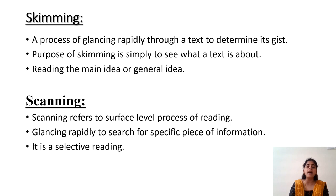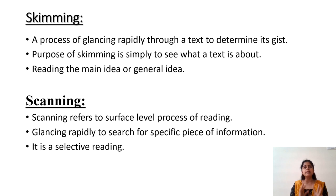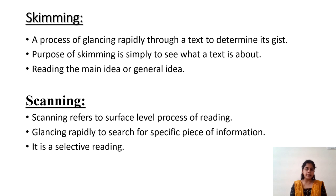Skimming is a process of glancing rapidly through a text to determine its gist. Readers try to understand the general idea of the text by reading only main ideas. The purpose of skimming is simply to see what a text is about. Readers read only main idea and general idea by reading keywords, italicized words, highlighted words, and underlined words. By reading these, we can comprehend the general and overall idea of the text. This is known as skimming.